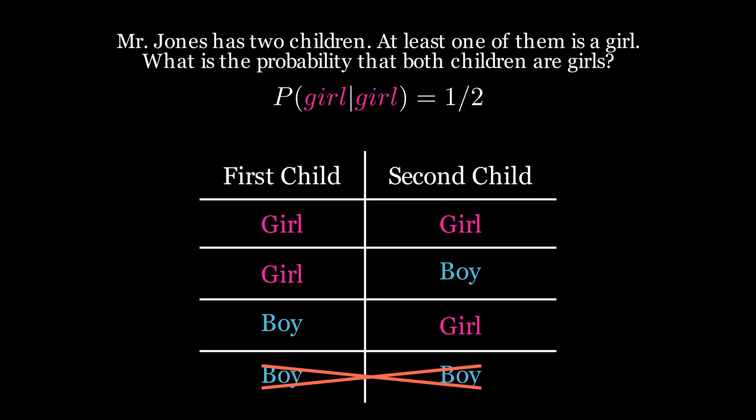The case where both are boys is not in the pool, because we know for sure one is a girl. Thus there are three equally likely outcomes, only one has both being girls, and thus the answer is one in three.